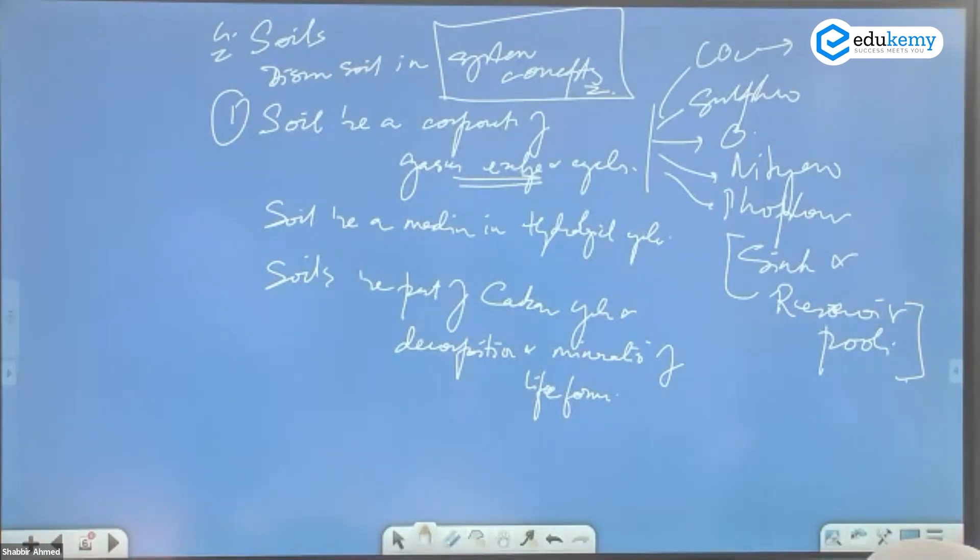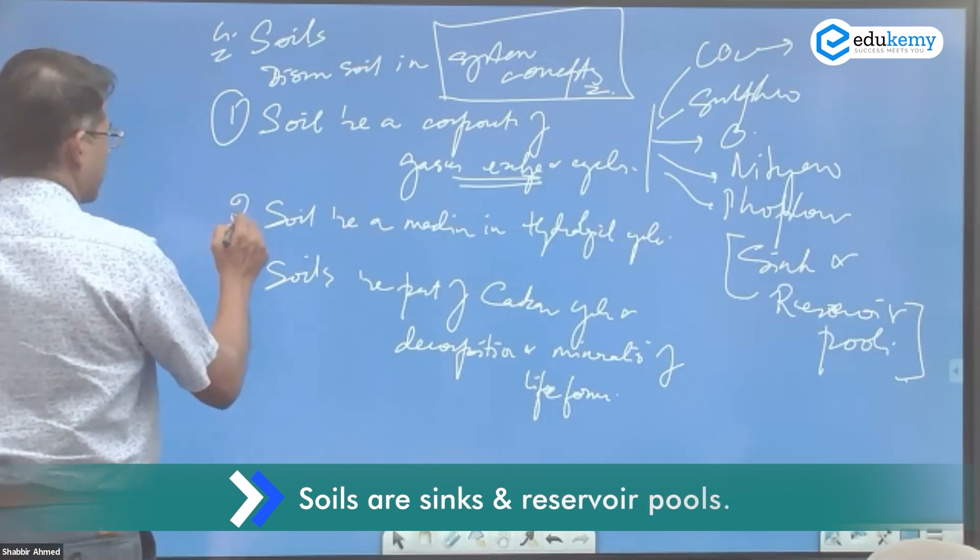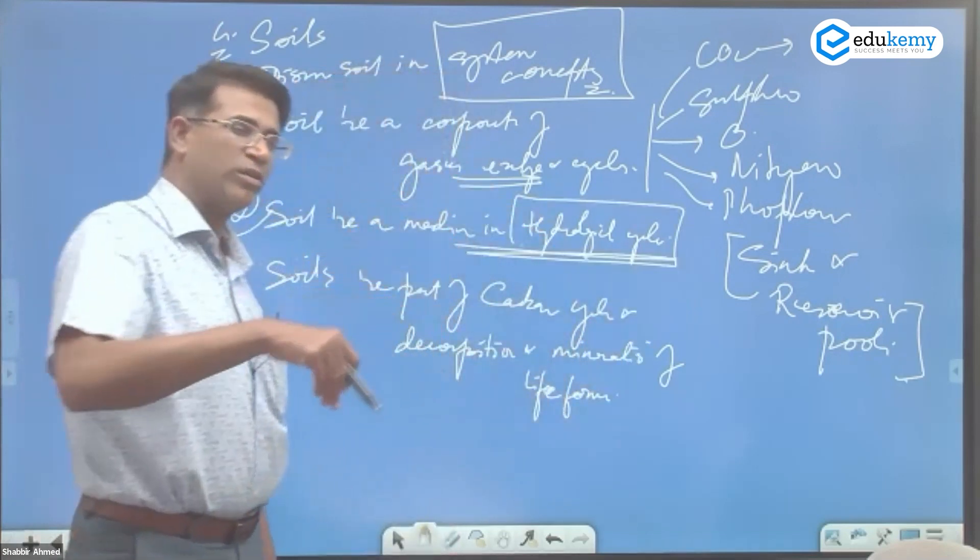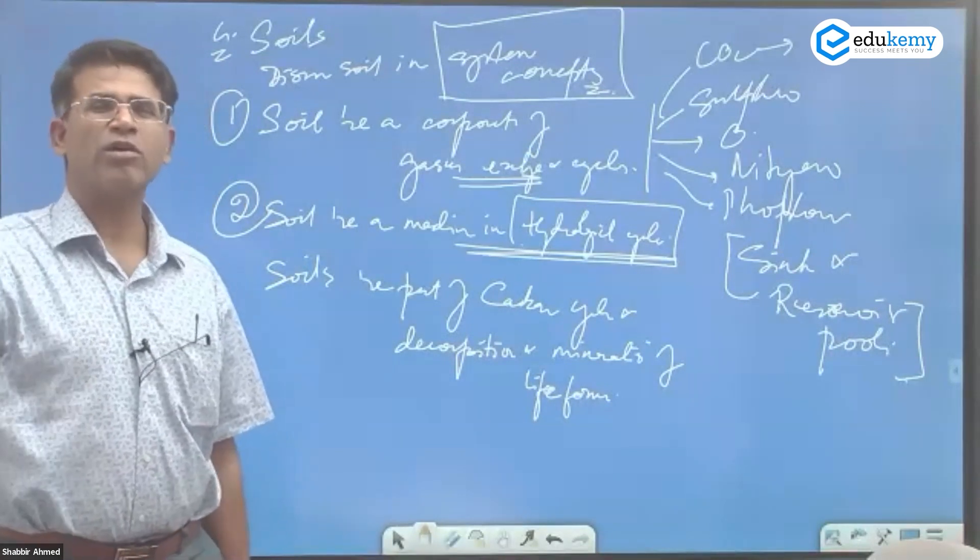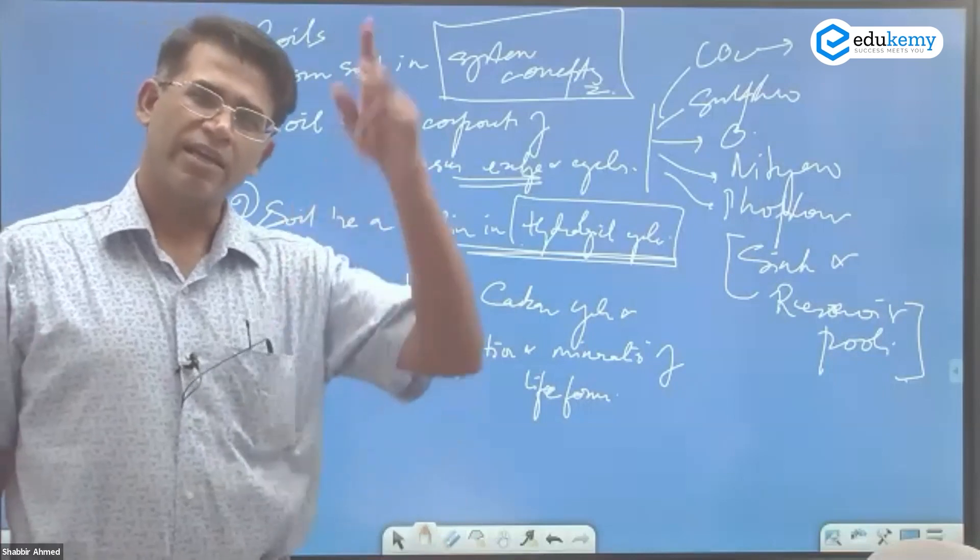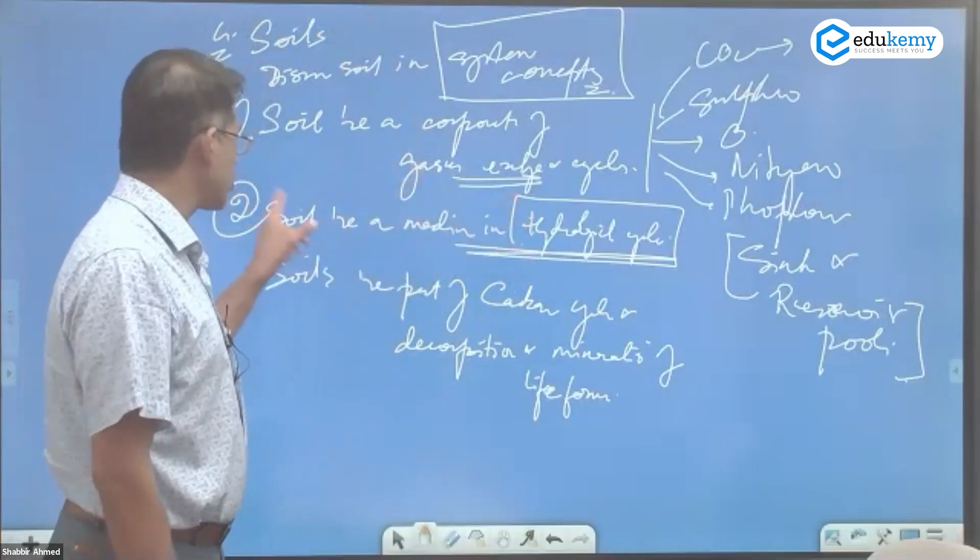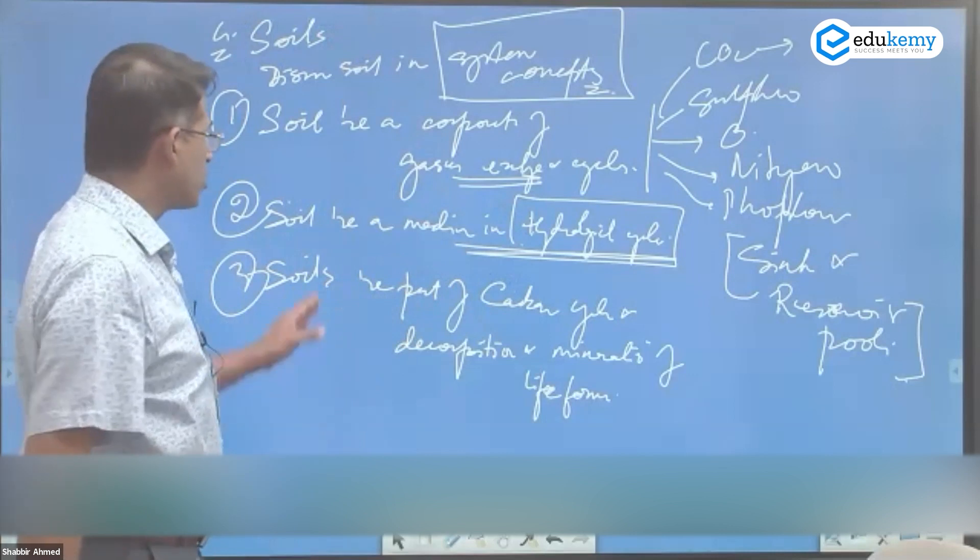They are the sinks and they also are the reservoir pools. Soils are a medium in the hydrological cycle, so water percolates down, becomes part of groundwater. Water evaporates because of evaporation, the water starts rising due to capillary action.